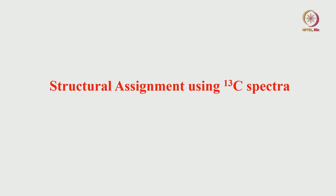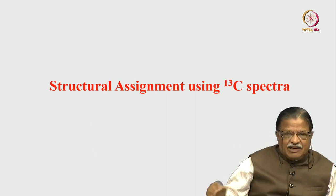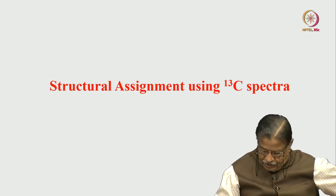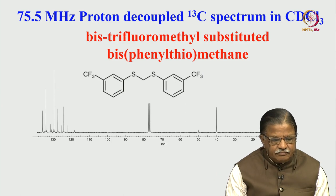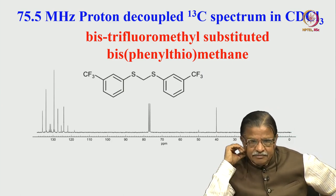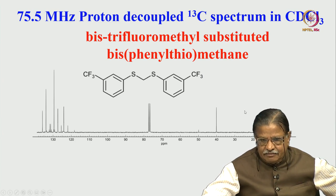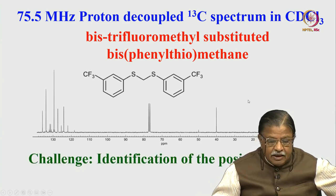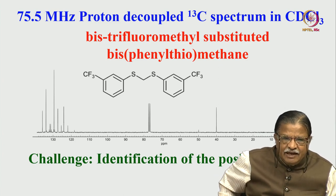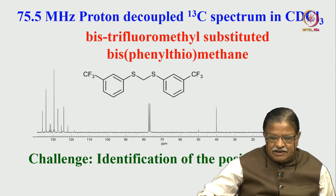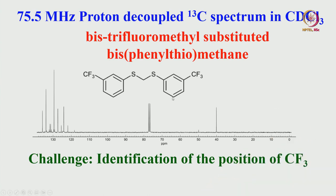Can we use carbon-13 NMR for structural assignment without using proton NMR? At times, very easily, just by looking at the carbon-13 NMR you can arrive at the structure of a molecule. Let us take this example: this is a proton-decoupled carbon-13 NMR spectrum of a molecule. First we must make the assignment of all the peaks and identify the position of the CF₃ group—whether it is at one position or another. Can we determine the structure from this carbon-13 spectrum alone? That is the challenge.